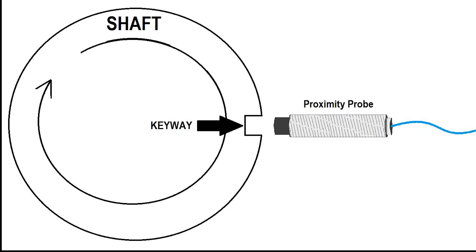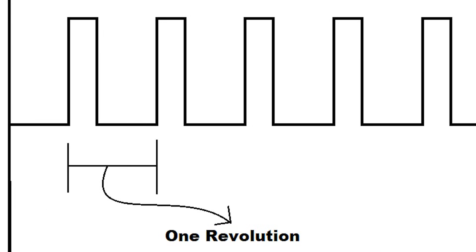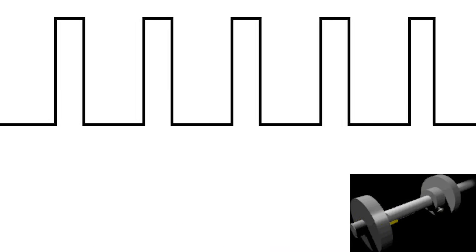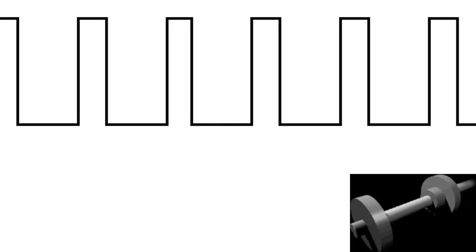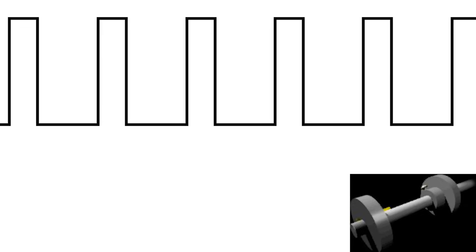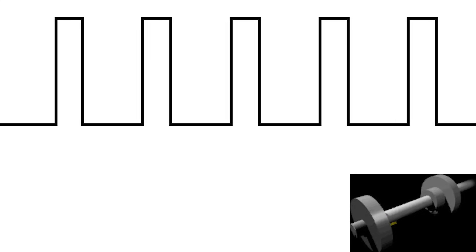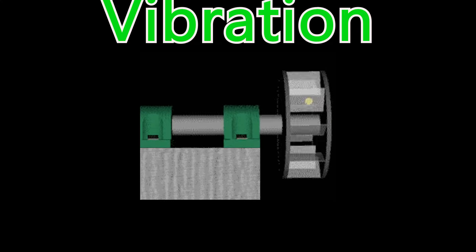A proximity probe can be installed over a notched section of a rotating object such as a keyway. Each time the keyway passes the proximity sensor, a change in voltage occurs representing one revolution. By applying a time factor to the voltage spikes, an equipment RPM can be measured. This type of measurement is referred to as a key phaser.